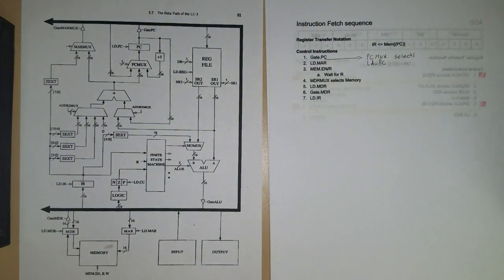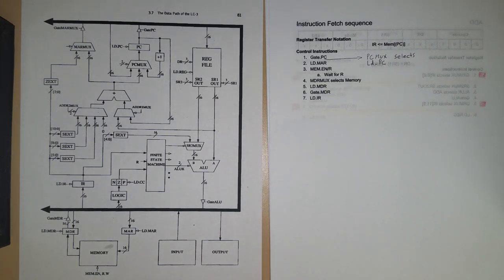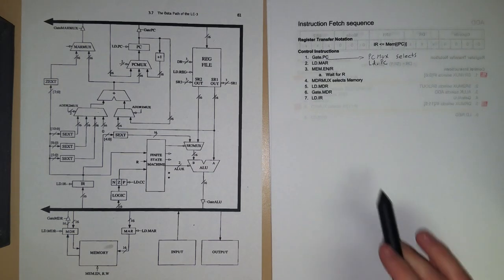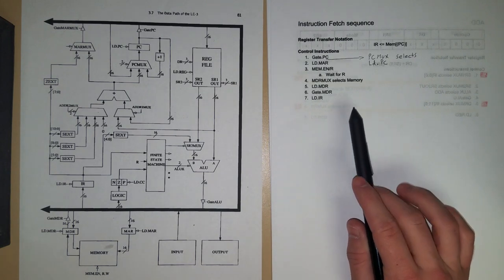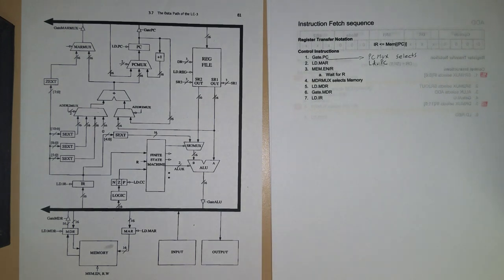In this video I'm going to be going over all the instructions in the LC3 and trying to derive their control signal sequences and register transfer descriptions. If you want to skip to any specific instruction, check the video description where I'll have links to each of the instructions covered. We're going to start with the fetch instruction, which comes from the six phases of the instruction cycle. The goal of the fetch instruction is to read our next instruction out of memory and write it into the instruction register so that we can execute it.